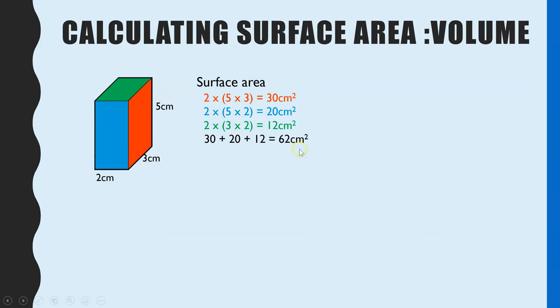Add that all together, our surface area is 62 centimeters squared. The volume, two times three times five. And that comes to 30. Surface area divided by the volume, which is what the ratio is. That comes to 2.07. So that's one skill linked to this topic. You could be asked to calculate the surface area to volume ratio.